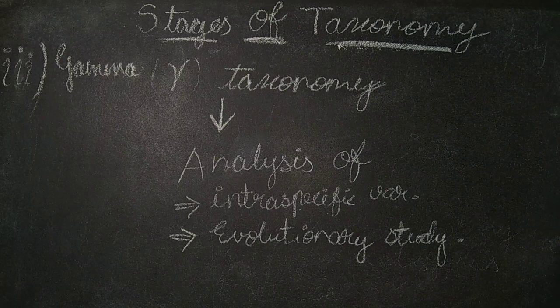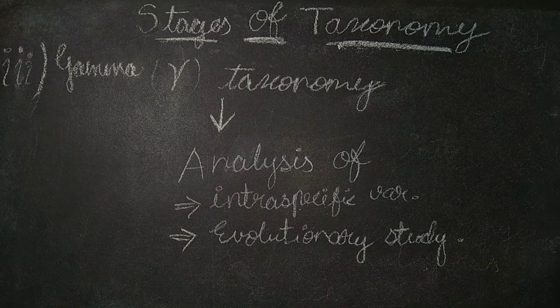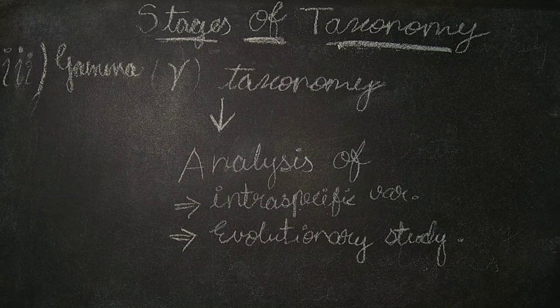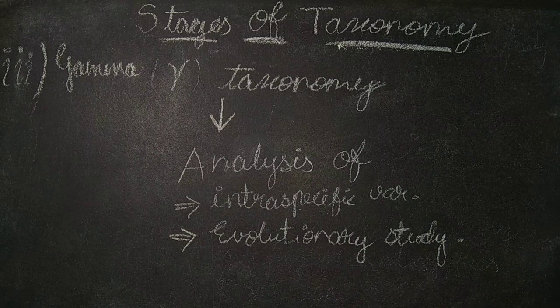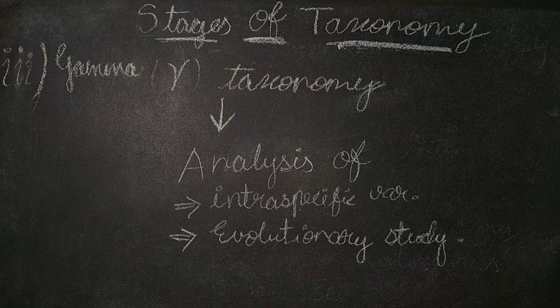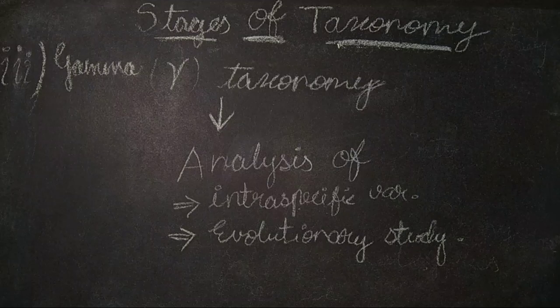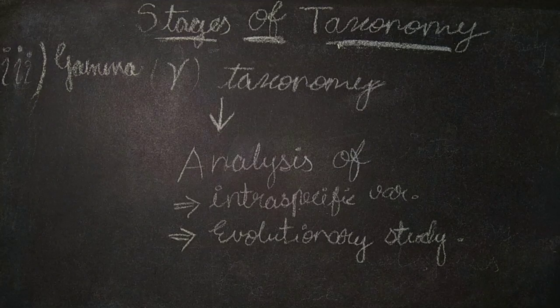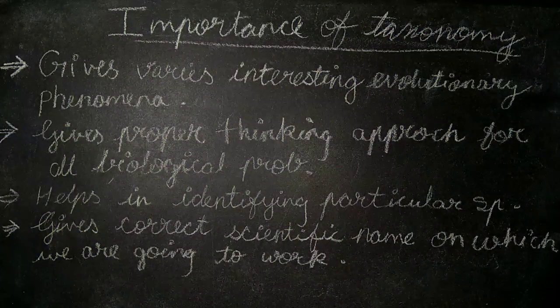From this we can conclude that alpha taxonomy is primarily used for finding, describing, and naming of taxa; beta taxonomy for sorting and arrangement; and gamma taxonomy for analysis. These are the basic definitions of taxonomy and the different stages of taxonomy. Now the question arises: why should we study this taxonomy? What is the importance of taxonomy?